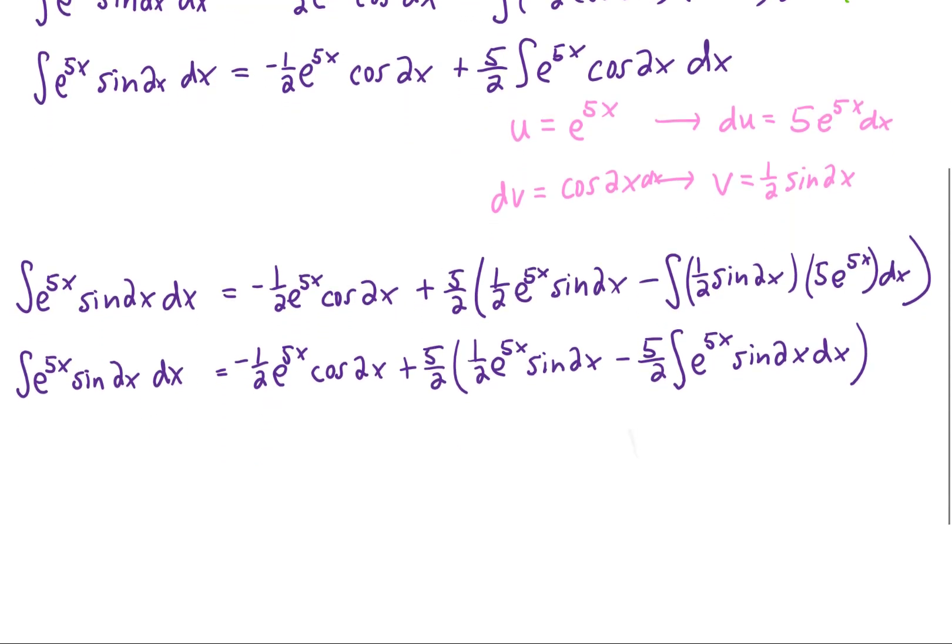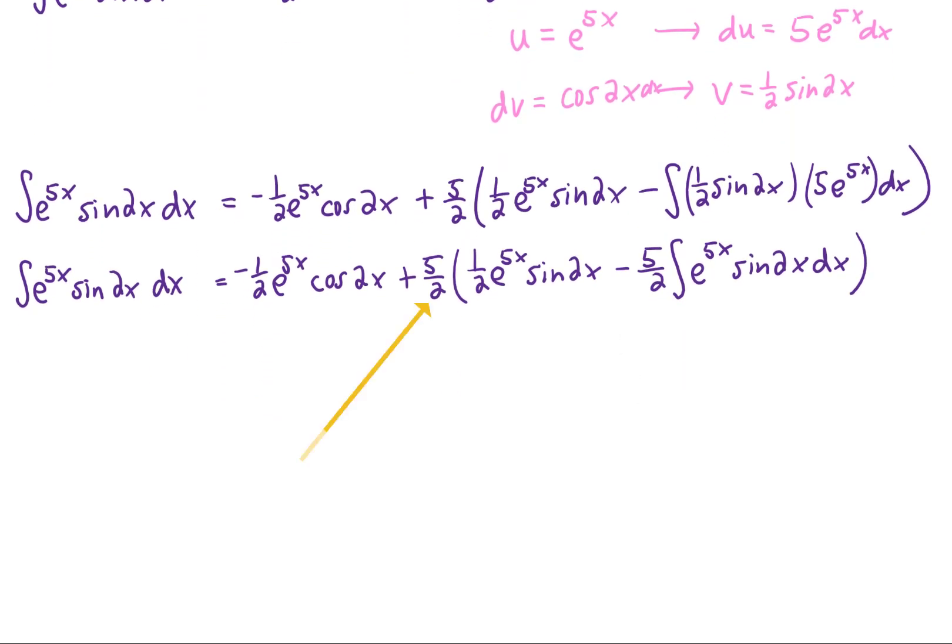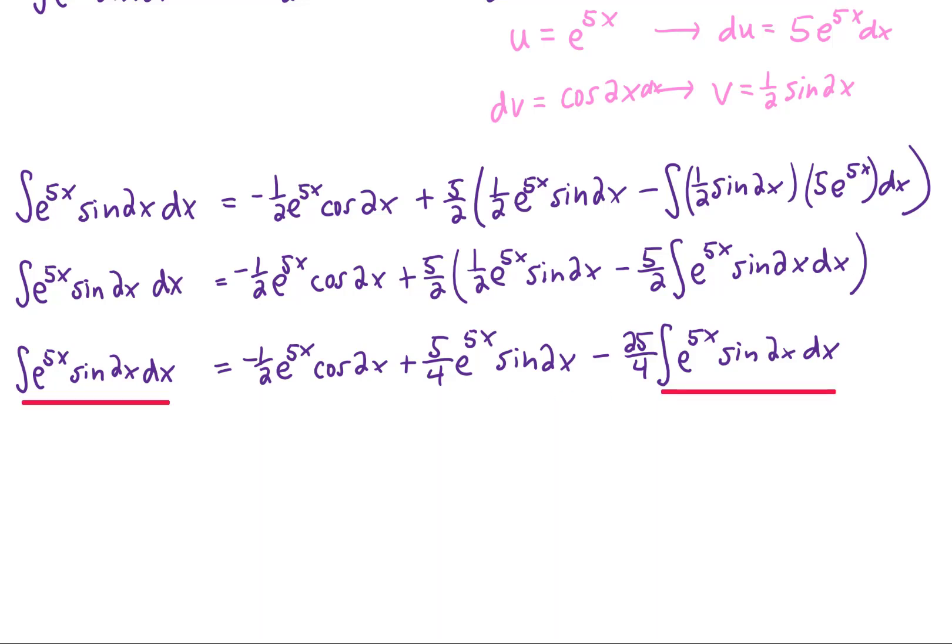Now, let's rewrite this whole line. This time, I'm going to distribute the 5 halves here through these parentheses. Now, again, what I usually say is that integration by parts has succeeded if the integral that remains is simpler than the integral that we started with. But you'll notice that in this case, these two integrals are exactly the same. In fact, we can think of them as like terms.